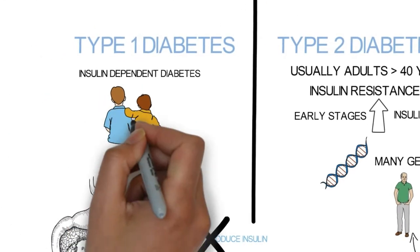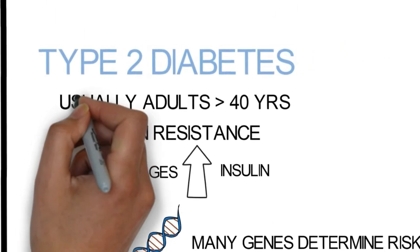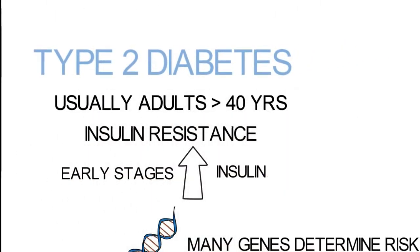To sum it up: type 1 diabetes is seen in children and adolescents because of destruction of the beta cells by the body's own immune system, and these individuals are completely dependent on insulin. Type 2 diabetes is seen in older individuals and develops due to a combination of genetic mutations and several risk factors, leading to insulin resistance.